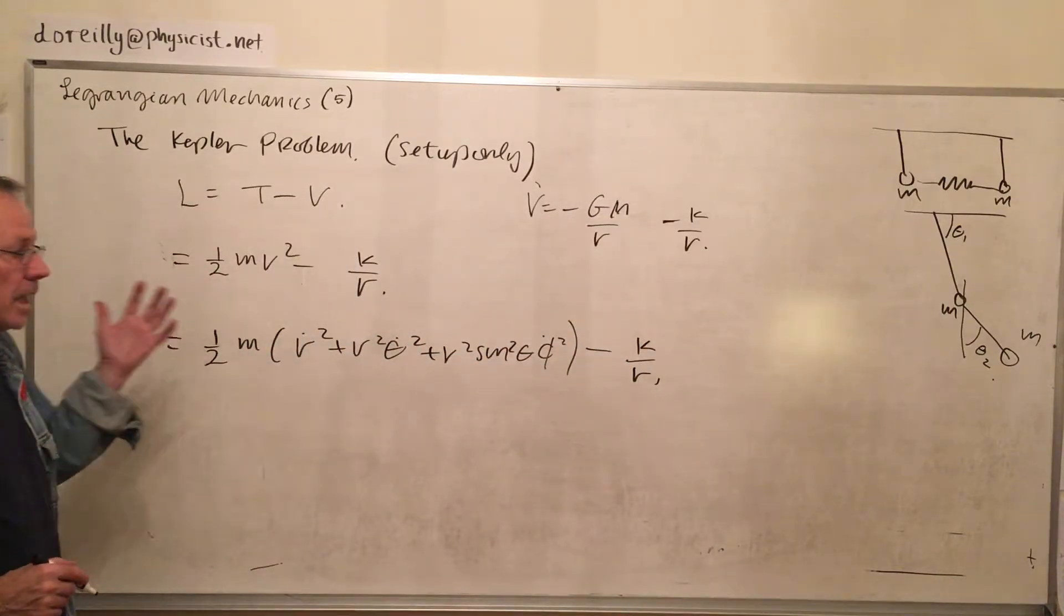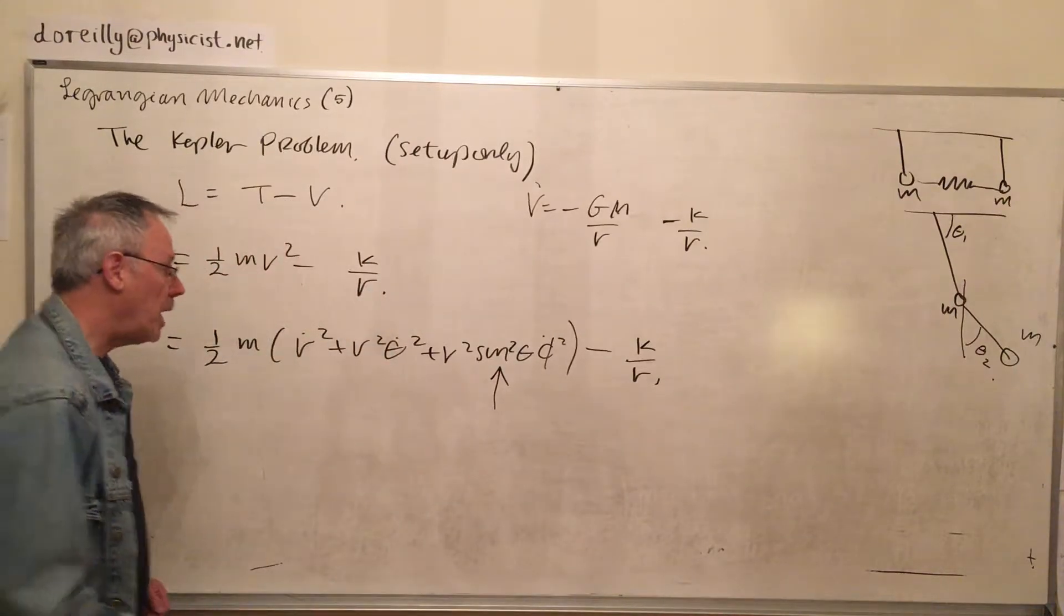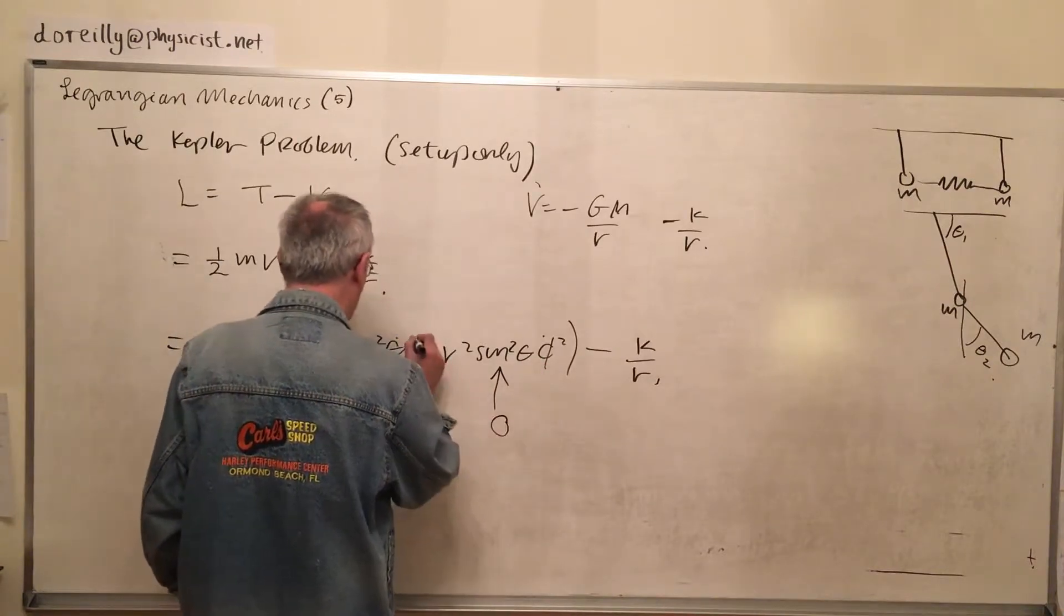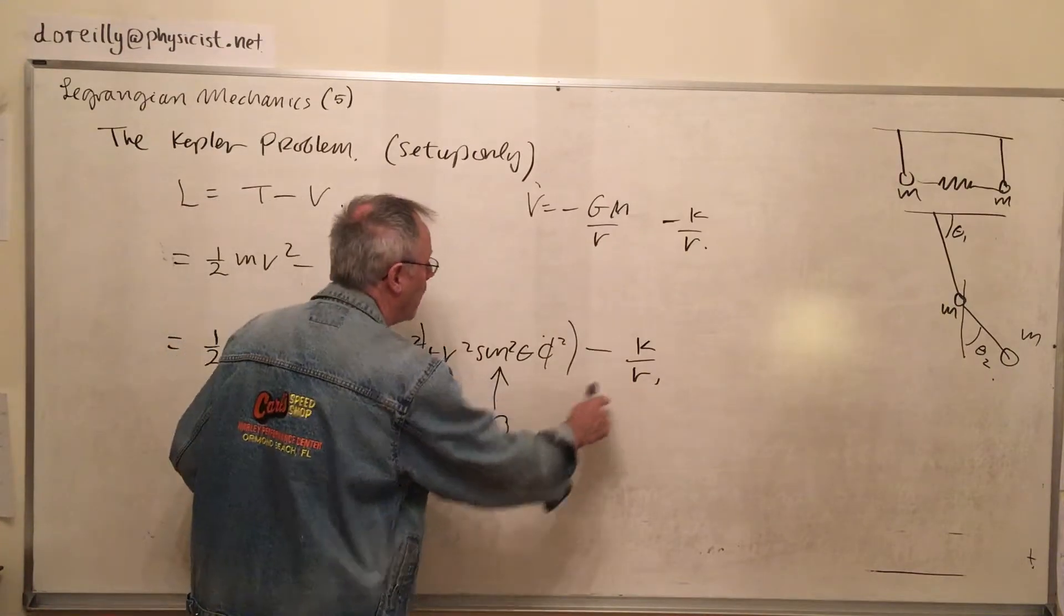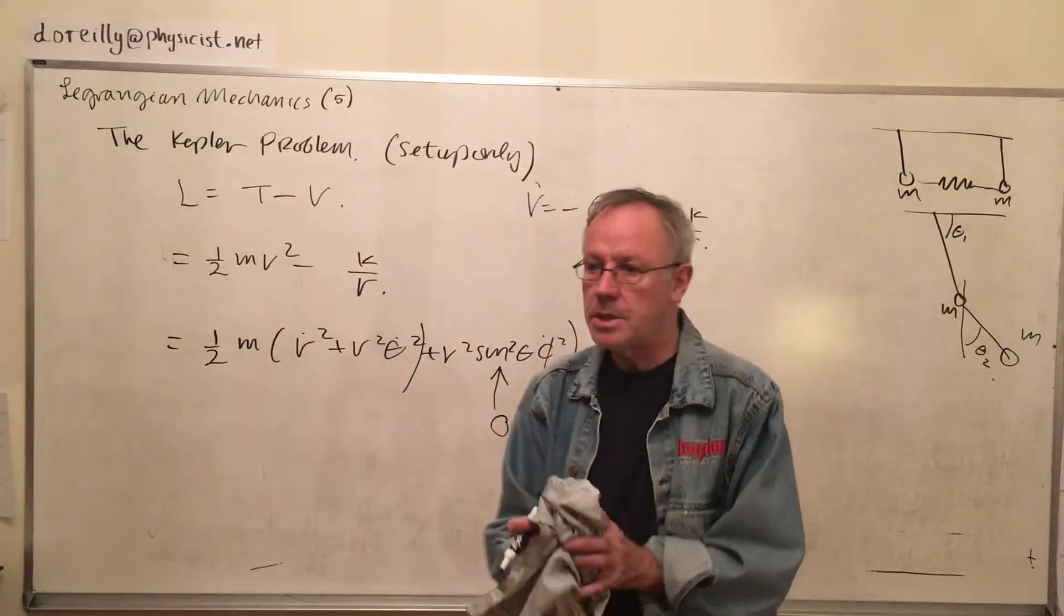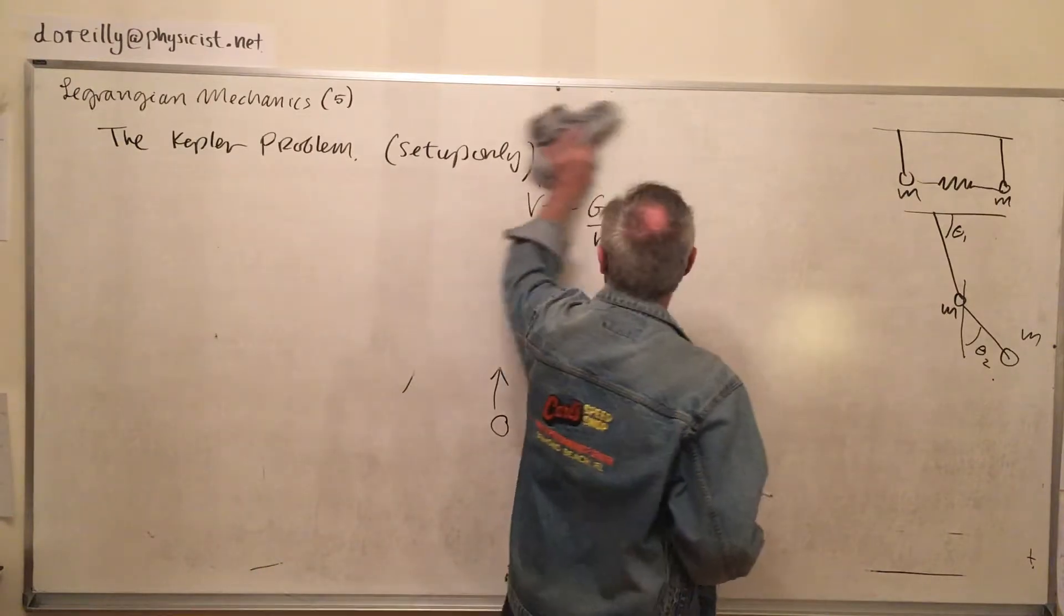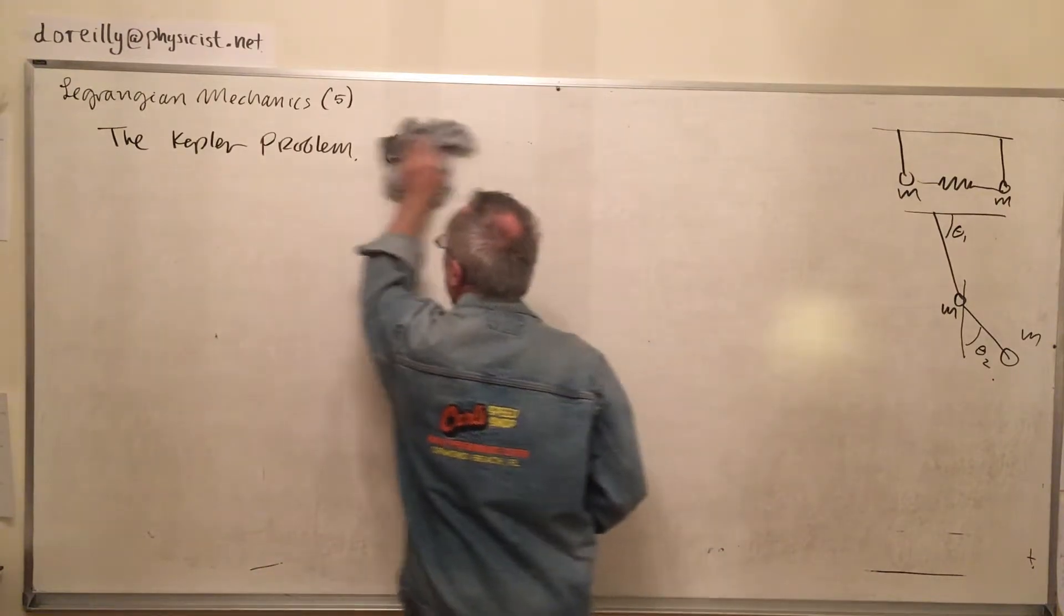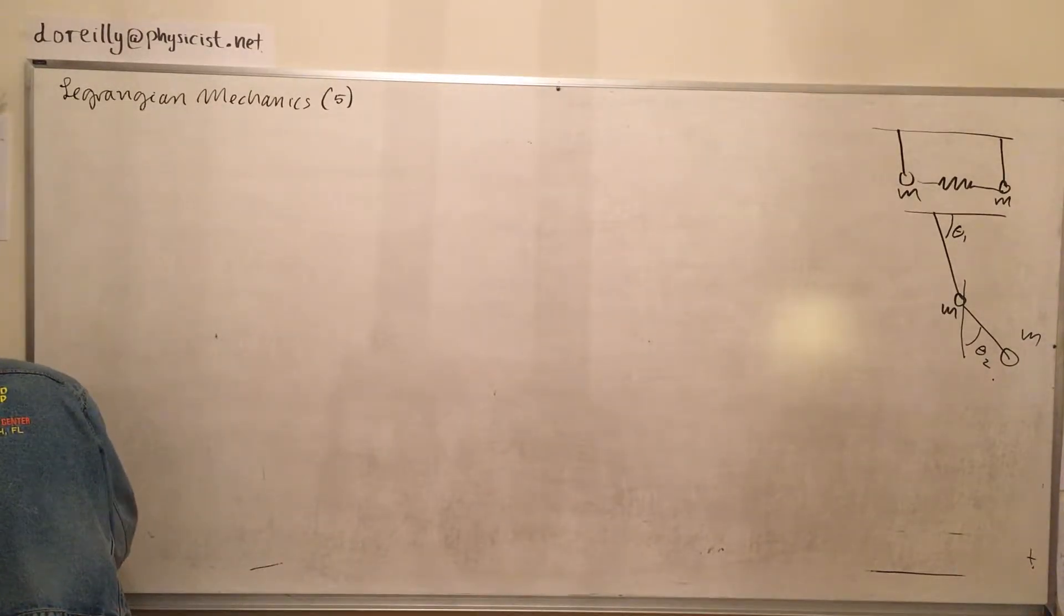And then you just apply Lagrange's equations as before. Now what's going to happen is that the motion is going to be confined to a plane. So this part is zero. So really you're going to be left with just these two components of velocity and this guy here. And then you will get an awkward set of equations, which is best solved using Hamiltonian's methods. So we'll have a look at Hamiltonian methods now very briefly. You'll see a different approach to mechanics.